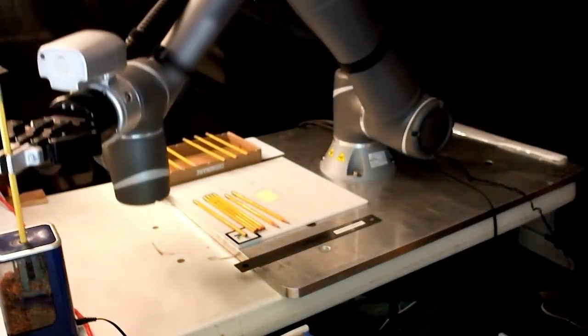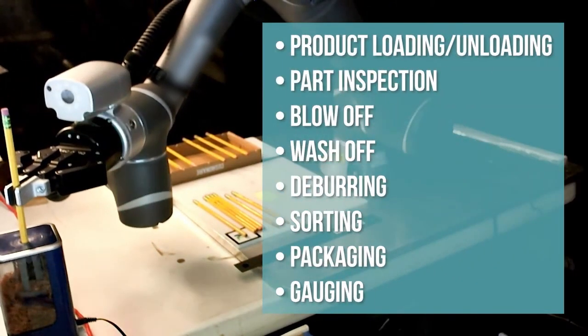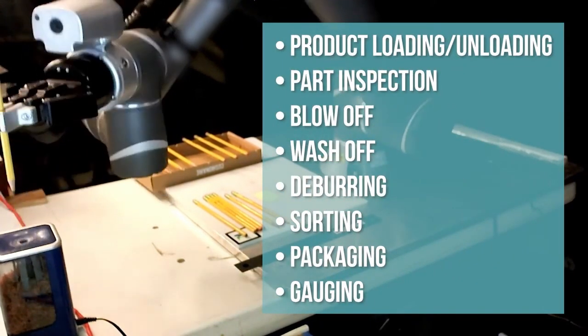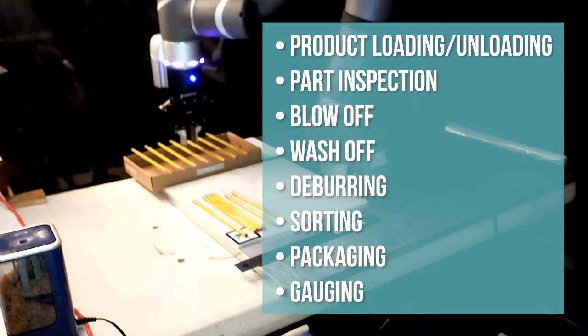Machine tending operations are often things like product loading and unloading, part deburring, sorting, packaging, and gauging.